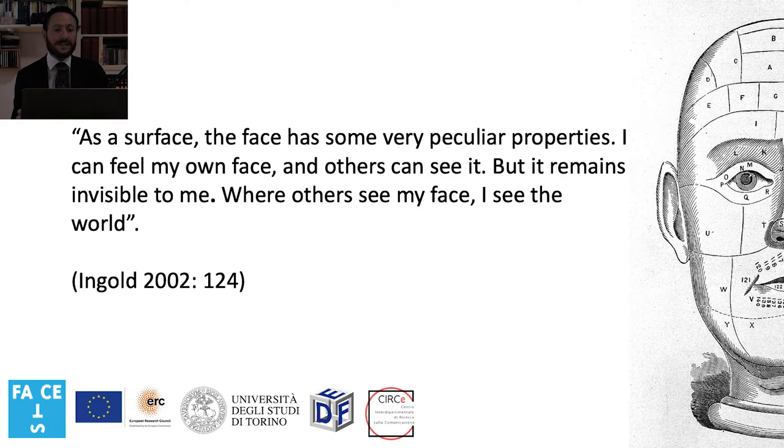Mirrors have many functions. First of all, mirrors and the self-perception of the human face are intertwined. Whilst it is visible to others, unless it is masked or disguised, the face is invisible to the subject. As the anthropologist Tim Ingold pointed out, as a surface, the face has some very peculiar properties. I can feel my own face and others can see it, but it remains invisible to me. Where others see my face, I see the world. Here lies, according to Umberto Eco, the magic of mirrors, because the mirror not only allows us to look closer at the world, but also to look at ourselves as others see us.